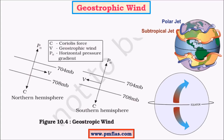First, let us look at a concept called geostrophic wind. Jet streams are the best example for geostrophic winds. Geostrophic winds are the winds which blow perpendicular to the pressure gradient force. There is a pressure difference between a high pressure system and a low pressure system, and this is the direction of the pressure gradient force. The pressure gradient force is the tendency of the wind to move in a certain direction, so wind travels from a region of high pressure to a region of lower pressure.